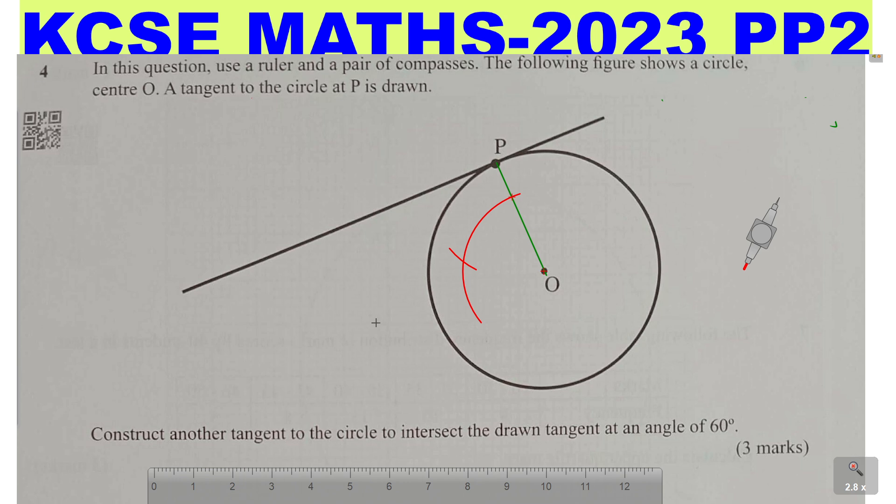Then using a ruler, straight line, join point O to the point of intersection of the two arcs like that. So that angle will be 60 degrees. So this angle here, this angle is 60 degrees. And this one is 90. And this angle here will be 30 degrees.